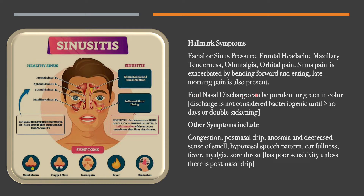Foul nasal discharge can be purulent or green in color. Discharge is not considered bacteriogenic until greater than 10 days, or double sickening, or the patient presents with fever of 102 degrees in 3 to 4 days. Other symptoms include congestion, post-nasal drip, anosmia, decreased sense of smell, hyponasal speech pattern, ear fullness, fever, myalgia, and sore throat. Sore throat has poor sensitivity unless there is post-nasal drip.